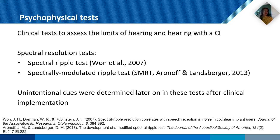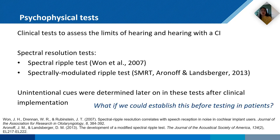For this, we have, for instance, the spectral resolution test — the spectral ripple test by WAN — and the spectrally modulated ripple test, the SMRT, by Aronoff and Landsberger. Unfortunately, after implementation of these tests, unintentional cues were determined later, and here we propose a pipeline to establish if any insights in unintentional cues can already be predicted prior to testing in patients.